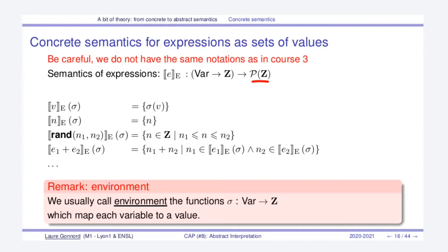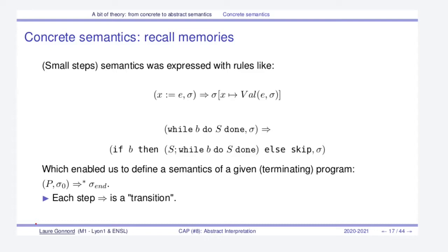As usual we use an environment to store the current values of variables, and the function sigma gives to any variable of the program its current value. Now that we have expressions, we are able to define the small-step semantics in terms of rules using this arrow. States at the left-hand and right-hand side of the rules are either tuples of programs and memory, or only memory when we deal with final states. The idea is that we can express all the commands of the program in terms of changes to the current memory state.